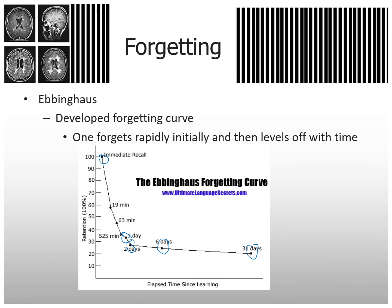The Ebbinghaus forgetting curve shows rapid forgetting in short-term memory. But once it gets into long-term memory — by about the second day — most of it is stored and you're going to remember most of that.